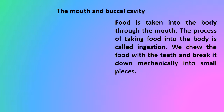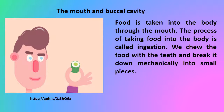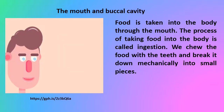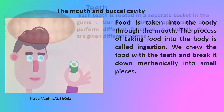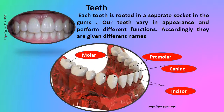Let us start with the mouth — the buccal cavity. Food is taken into the body through the mouth. The process of taking food into the body is called ingestion. We chew the food with the teeth and break it down mechanically into small pieces. Each tooth is rooted in a separate socket in the gums. Our teeth vary in appearance and perform different functions, and are given different names: molar, premolar, canine, and incisor.